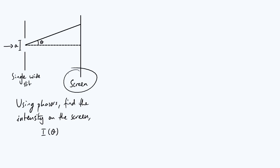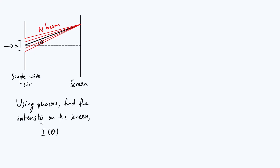That intensity is going to vary with position on the screen, so what we're trying to find is the intensity I as a function of theta, where theta is the angle defined on the diagram. To understand why the intensity varies with theta — in other words why there are bright spots and darker spots — you have to imagine taking your single wide slit and splitting it up into many many little point sources. I've called the number of beams n, and eventually we're interested in the limiting case where n is infinite, since the space in the slit is continuous.